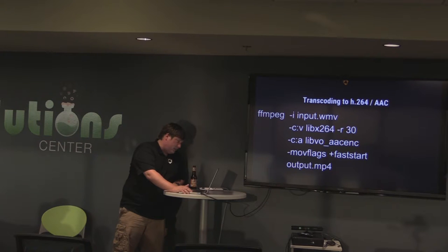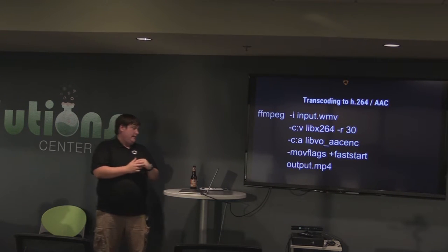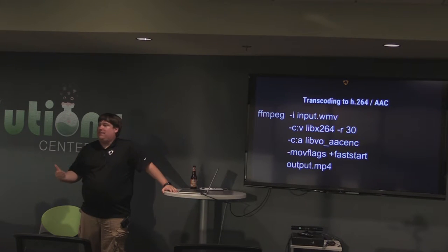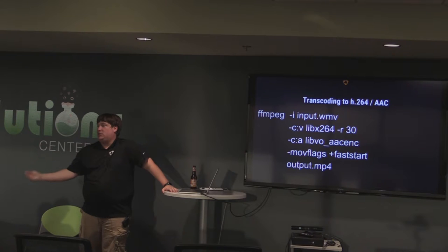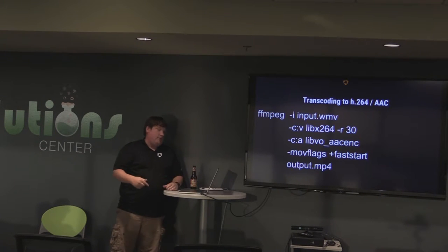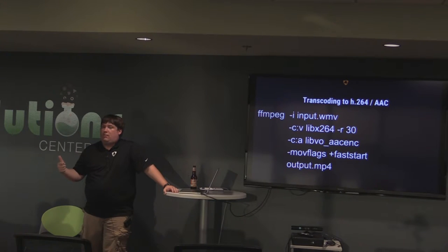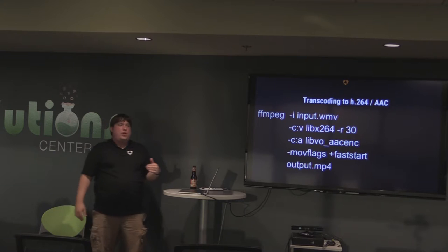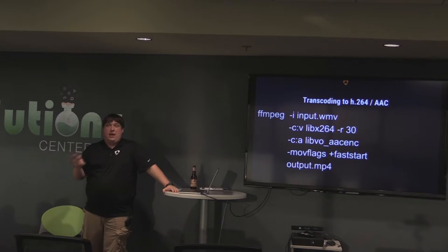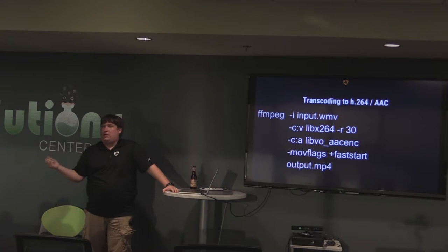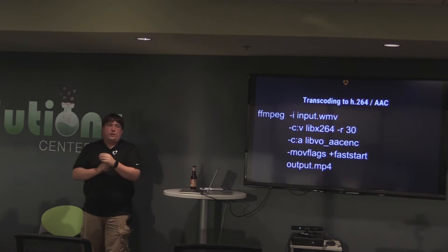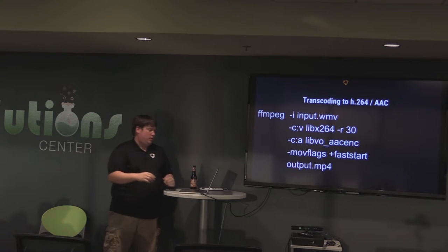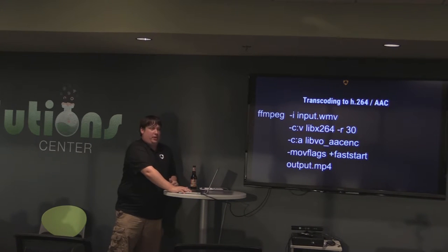Here's a sample FFmpeg command to transcode. This takes an input WMV and provides an output MP4 file. You provide the dash C colon video flag for the video codec — so encoding to H.264 — then the audio codec, and the flags that allow streaming before the full file is downloaded. Transcoding is CPU expensive and CPU bound. On my MacBook Pro, I can encode at around 30 frames per second, so an hour of video takes about an hour to transcode. At Huddle, we do all our encoding on the cloud on an auto-scaling EC2 cluster, with FFmpeg commands running underneath.